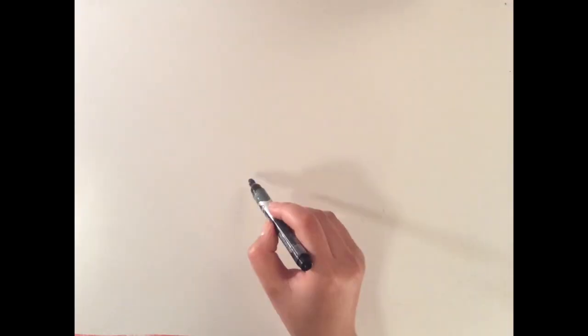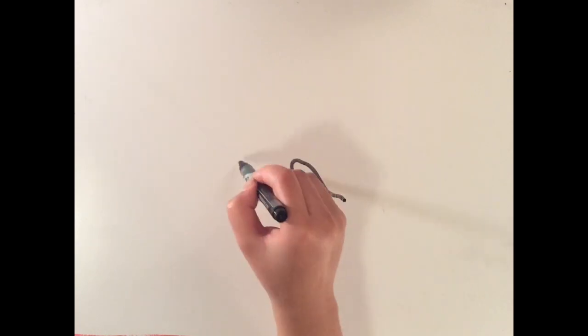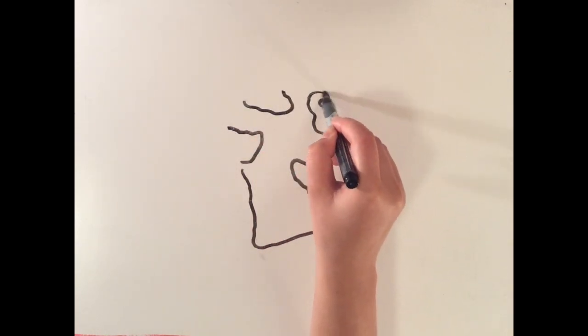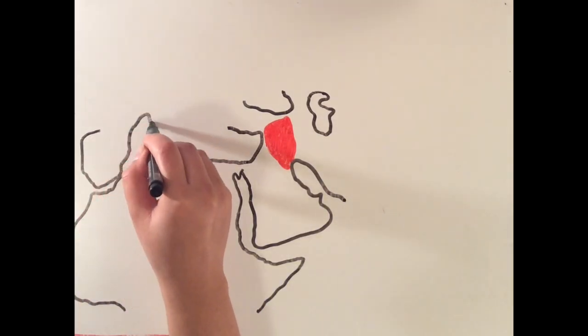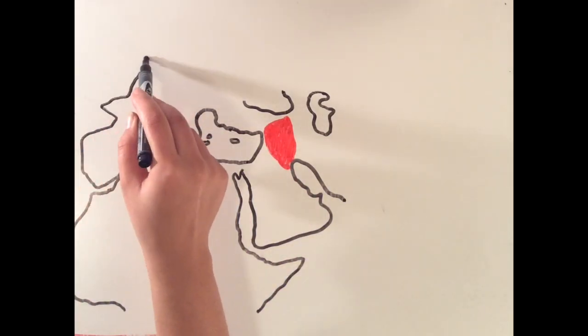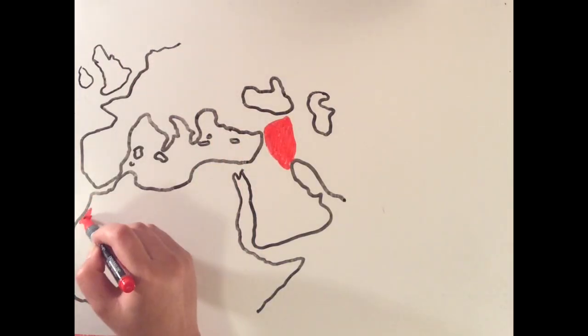The earliest maps to date were created by the Babylonians from the ancient civilization of Mesopotamia, now modern-day Iraq, around the 9th century BC, though many argue that the birth of geography as a field of study was in the ancient Greco-Roman civilization.